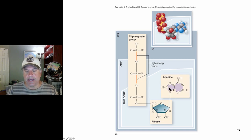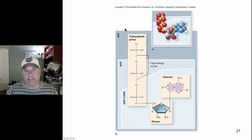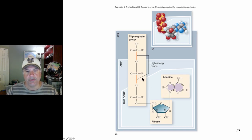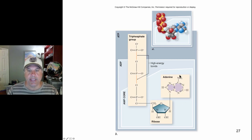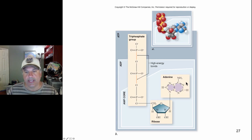Here is our adenine, our nitrogenous base, here is our ribose sugar, and here are our 3 phosphate groups. ATP is a precursor for RNA polymerization — it's a monomer in the RNA polymer. To add ATP to a growing RNA chain, we cut off 2 phosphate groups and this phosphate becomes part of the sugar-phosphate backbone of RNA. But right now we are considering it as the energy currency molecule of the cell.